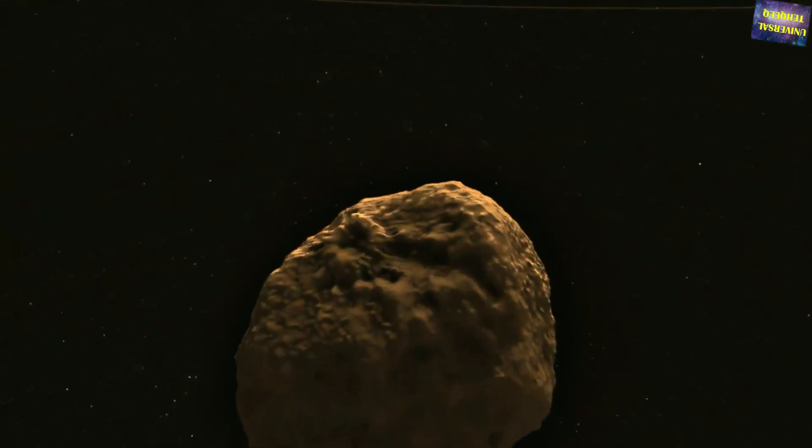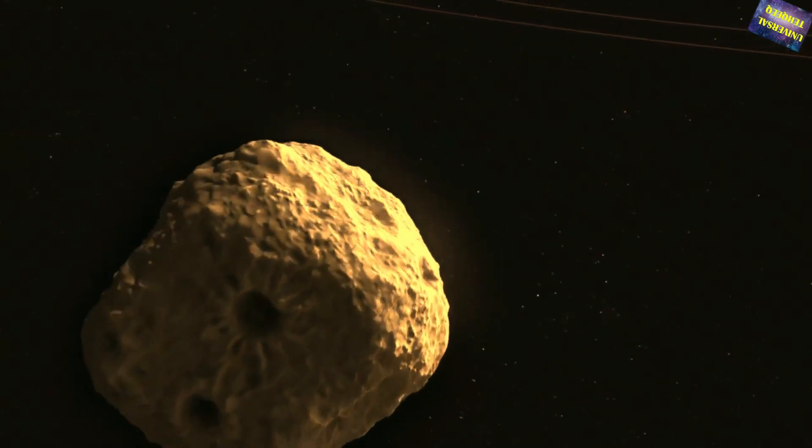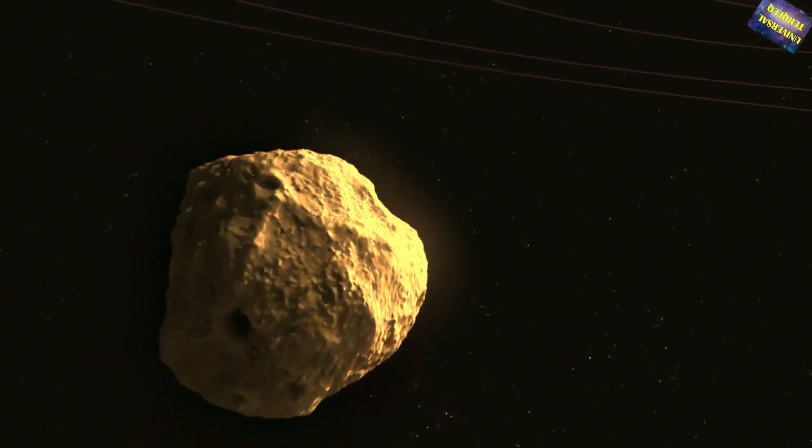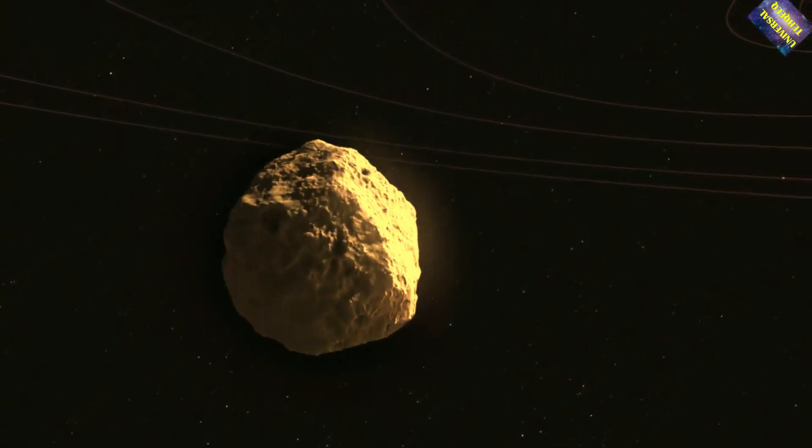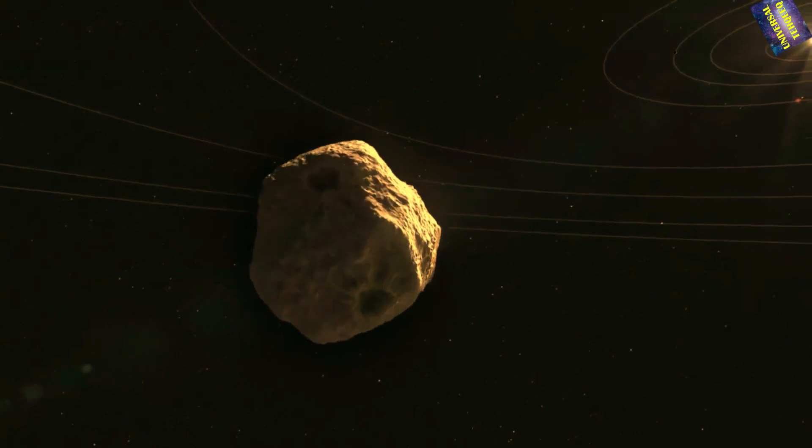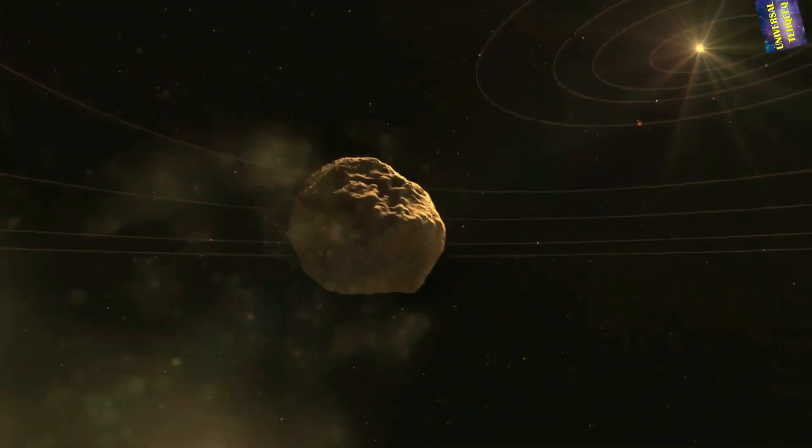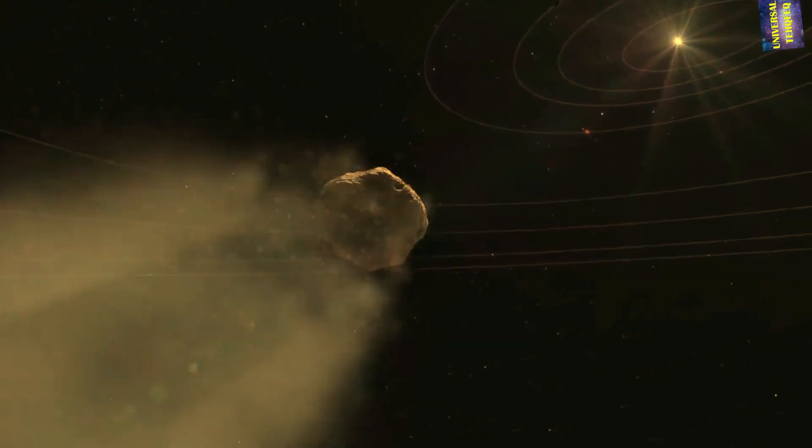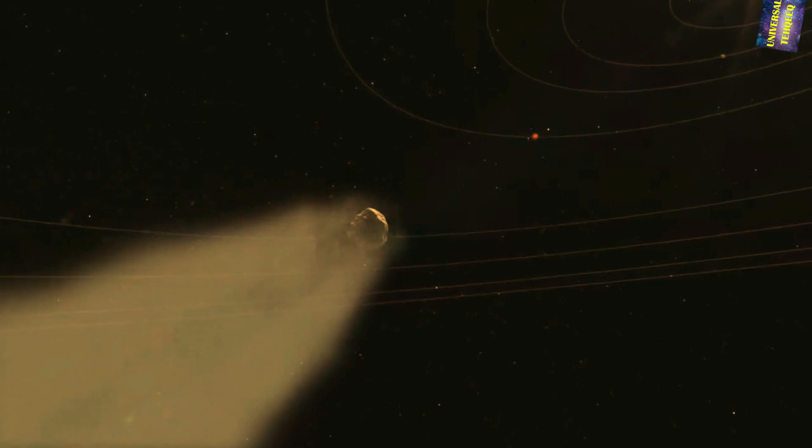The panspermia hypothesis suggests that life on Earth originated from microbial life forms transported through space via comets, asteroids, or other celestial bodies. It proposes that the building blocks of life and even microorganisms could have been present in the early solar system and delivered to Earth. This theory raises the possibility that life may have existed elsewhere in the universe before Earth's formation.